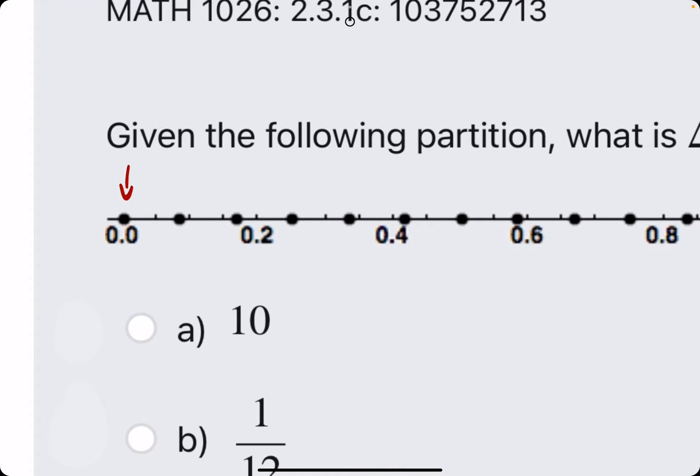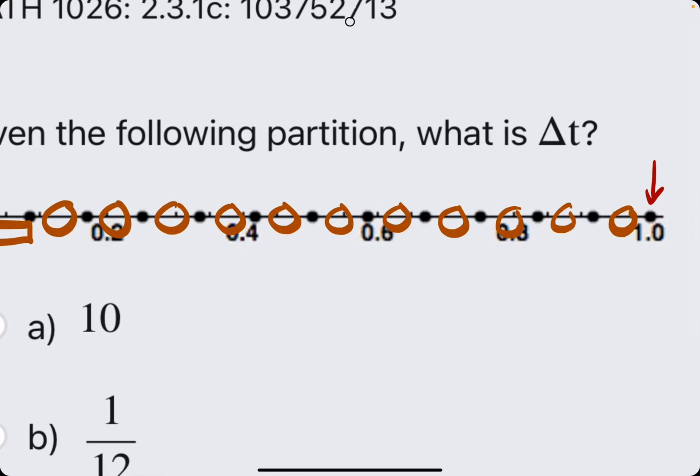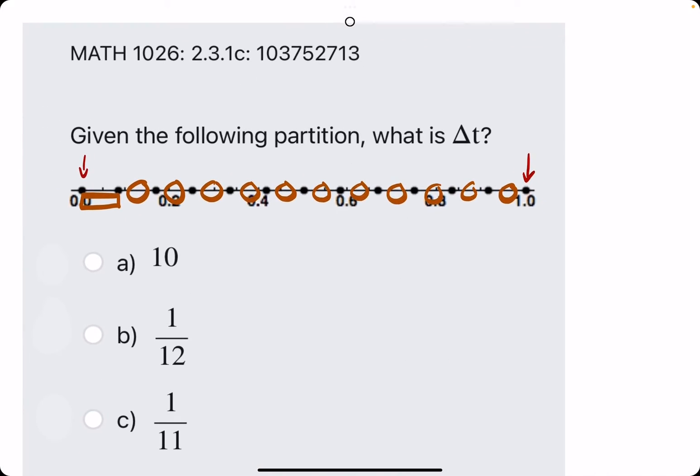So like from this first dot to the second dot is one partition. So we have one, two, three, four, five, six, seven, eight, nine, ten, eleven, twelve. So twelve partitions between zero and one.